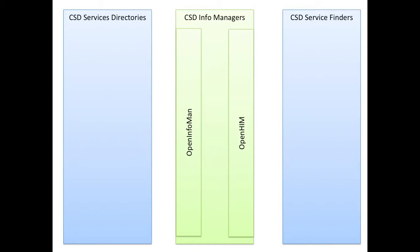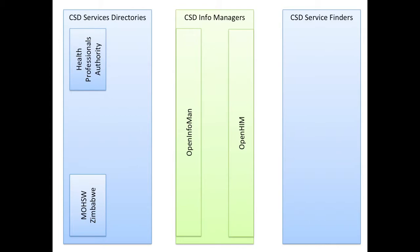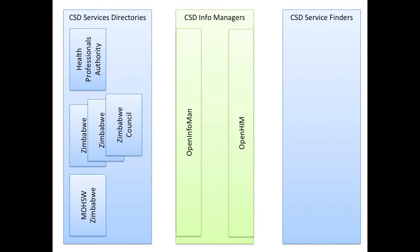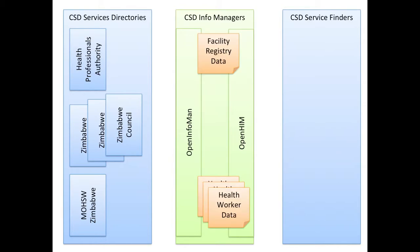To give one concrete example of how this is deployed in country, we look at Zimbabwe. Here we have a health professionals authority that is responsible for registering the public and private sector health facilities. We also have the Ministry of Health Zimbabwe, which has its HR management system, which provides deployment information about public sector health workers. In addition, there are a number of professional councils that provide certification information for the cadres that they manage. So in the Info Manager, we have several sources of data that we need to combine: the facility registry data coming from the HPA, as well as the health worker data coming from the councils and the Ministry of Health Social Welfare's HR system.